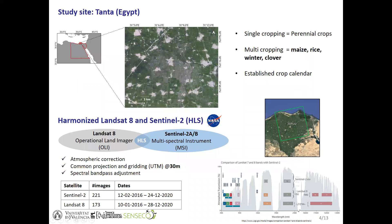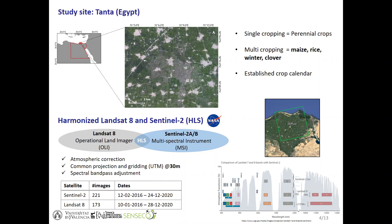Our study focuses on a single site located in the northern Nile delta, the most important agricultural region of Egypt, where intensive agricultural schemes are predominant and crops are cultivated under irrigation with water mainly from the Nile. There are two main cropping systems: single cropping parcels with annual perennial crops such as grape and citrus, and crop rotation parcels with different crop types planted per year — mainly maize, rice, winter wheat, and clover.